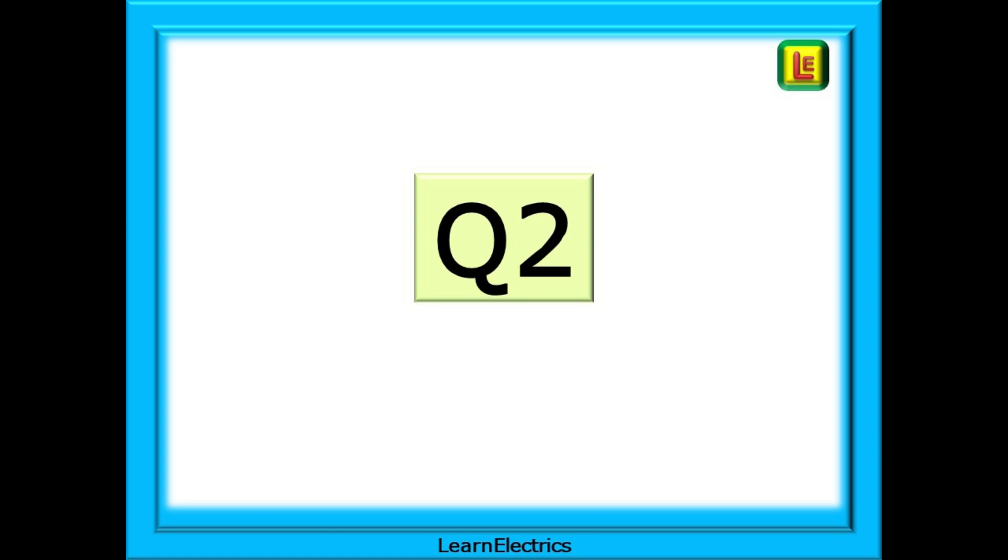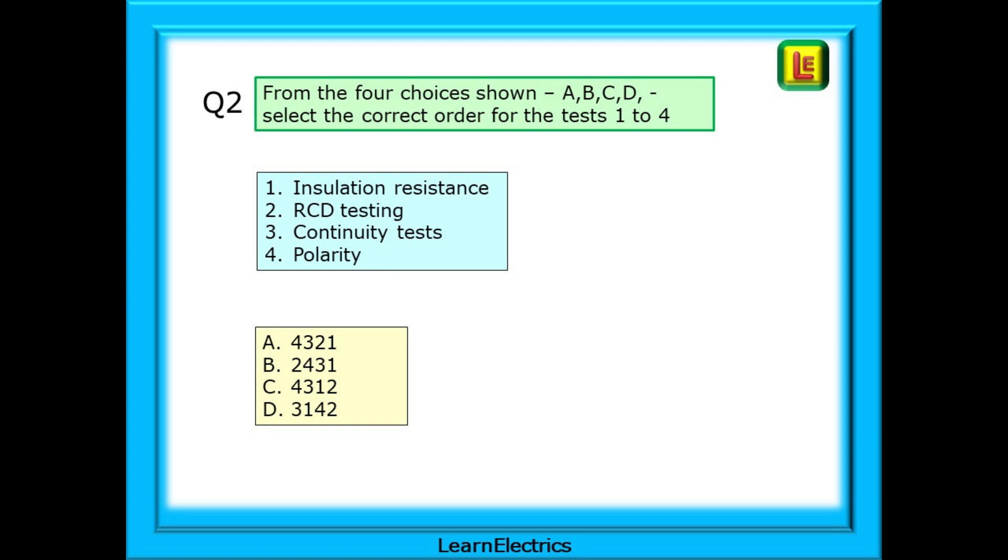Question 2 next. This question looks simple enough, but be careful as one of the books appears to show a different order. Let's look. From the four choices shown, A, B, C and D, select the correct order for the tests numbered 1 to 4. Simple enough, four tests have been selected, put them in the correct order for testing.